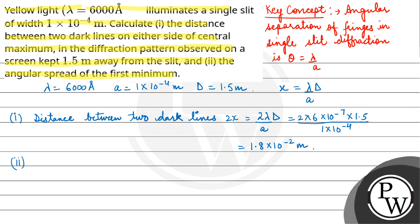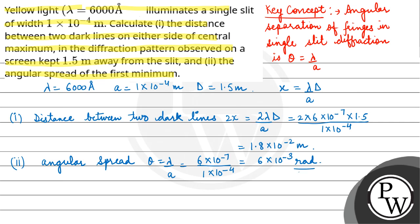1.8×10⁻² meter. Secondly, we have to find the angular spread for the first minimum, which is λ/a = 6×10⁻⁷ / 1×10⁻⁴ = 6×10⁻³ radian. I hope you understood it well, best of luck.